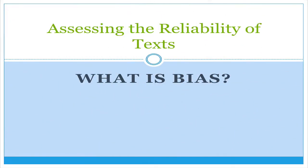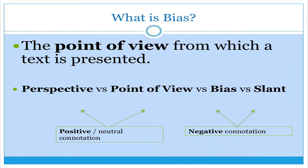Hello and welcome to our podcast on the term of bias. Let's go ahead and get started and see if we can dive right into the idea of assessing the reliability of texts. So first off, what is bias? Bias is defined as the point of view from which a text is presented.